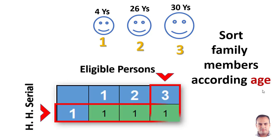We are in the first row, the first household. We have three eligible persons. So we have to choose the first one.